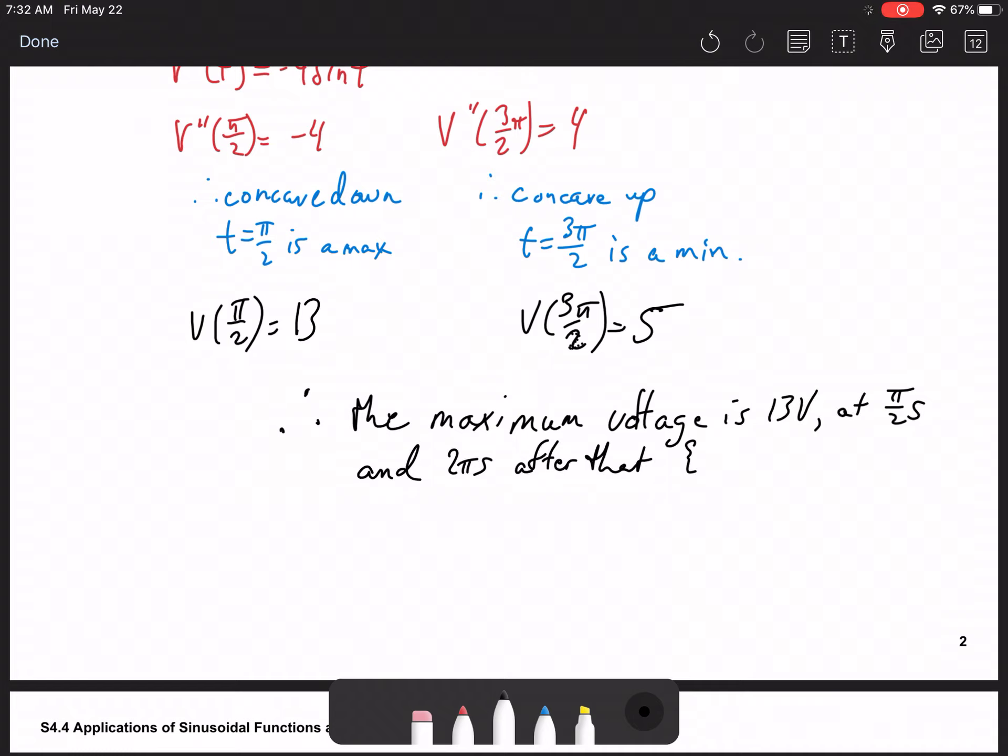If you want, you can give a function for it. So that t value is π/2 + k times 2π, and k is an element of the integers. And also the minimum is 5 volts at t = 3π/2 + k times 2π, where k is an integer such that t is the value of 3π/2 plus every multiple of 2π after that.